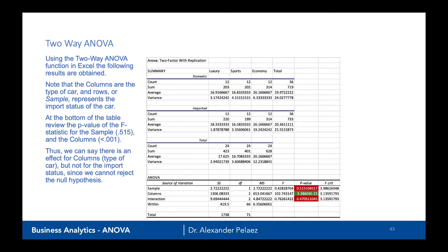Looking at the columns, our null hypothesis is that the means of the type of car are the same, with the alternative that at least one is different. Following along the columns line, the p-value is very small — it's times 10 to the negative 21st power — which is less than 0.05. Therefore, we can reject the null hypothesis and say we have evidence of an effect of the type of car on miles per gallon.